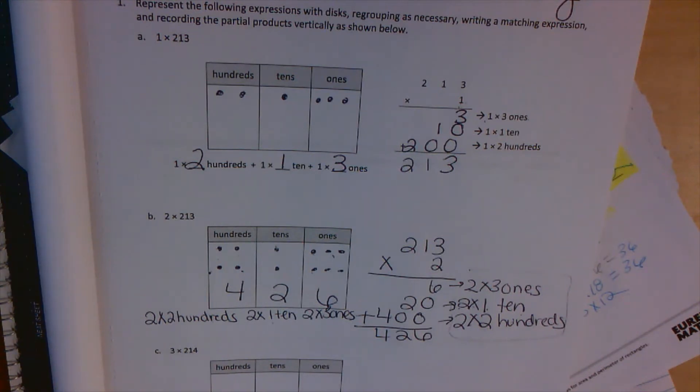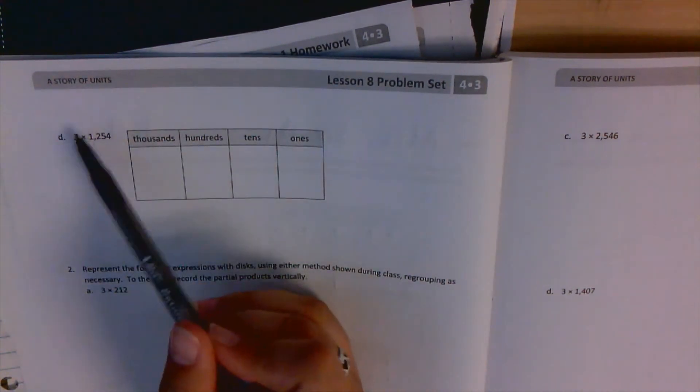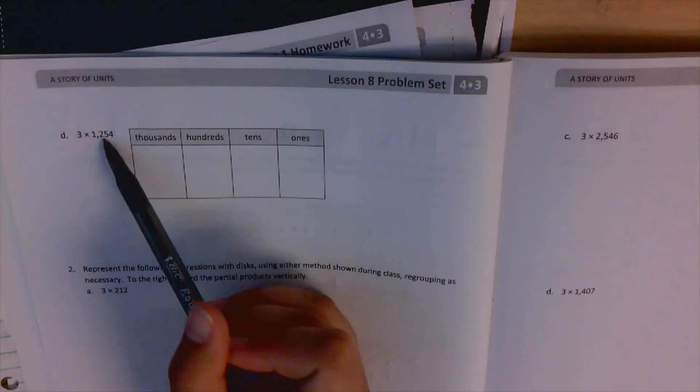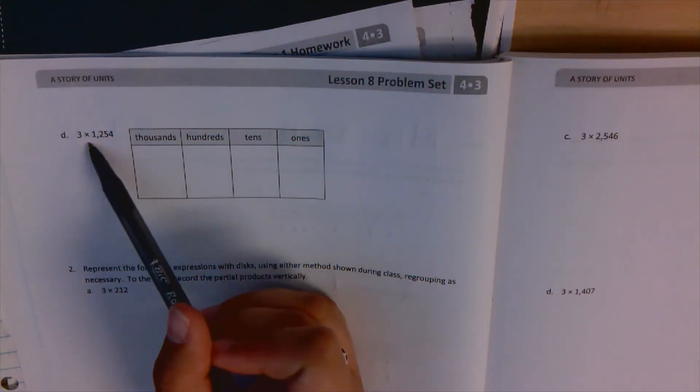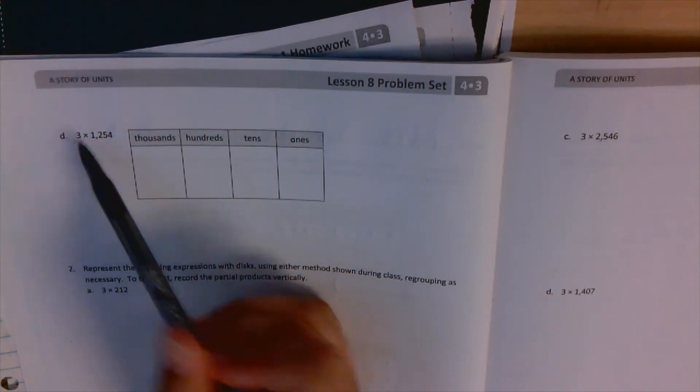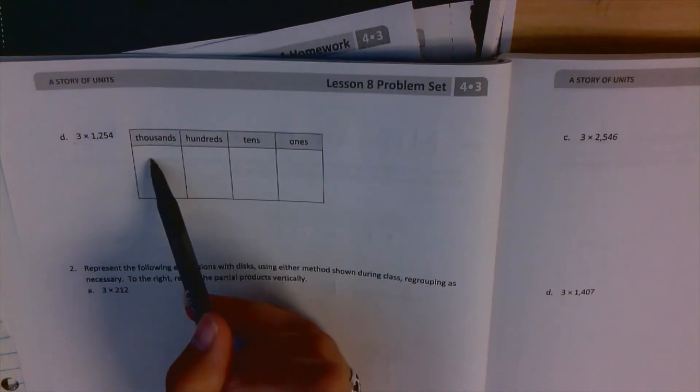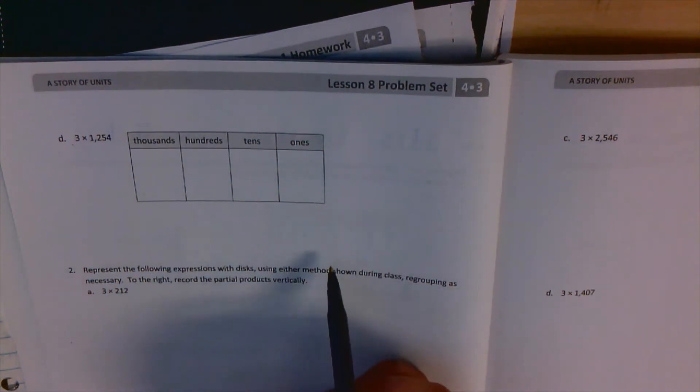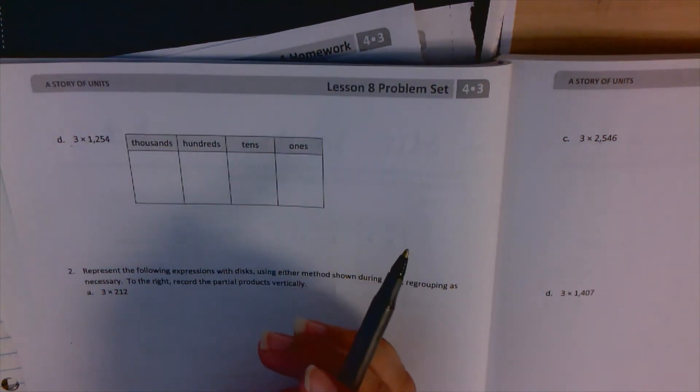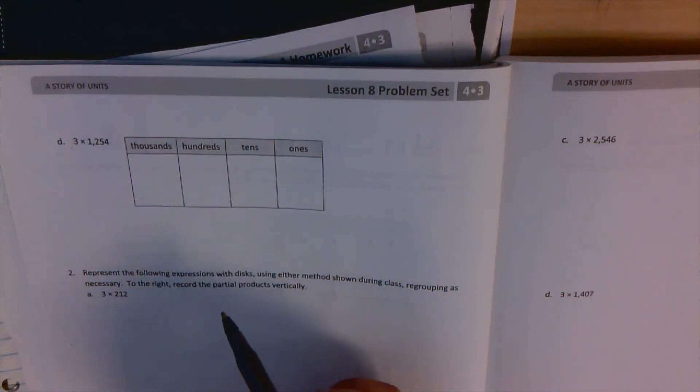Let's move to the back side. On 1d, we can see that we have 3 times 1,254. And now we are doing a 4-digit number multiplied by a single-digit number. And I'm actually going to set this problem up for you, help you get it started, but I'm not going to completely finish it. We can check it in the morning.